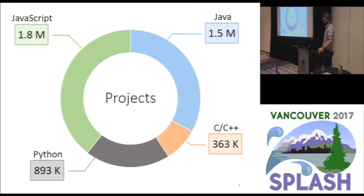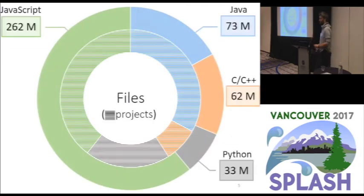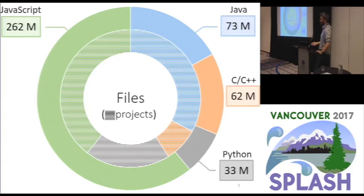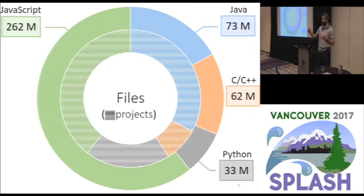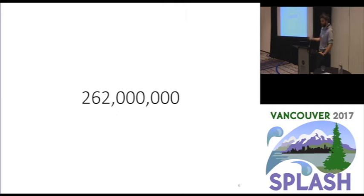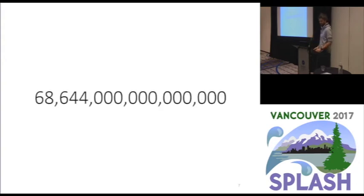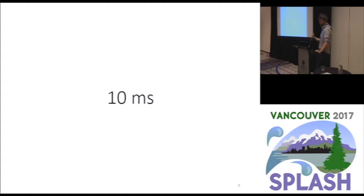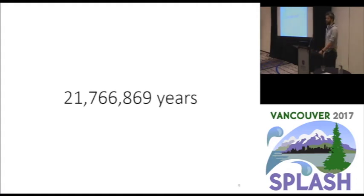In terms of files — the outer circle — JavaScript dominated with 262 million files, more than the other three languages combined. If we were to analyze this and naively compare each file with every other, that means 262 million files in JavaScript's worst case, leading to an astronomical number of comparisons. Assuming each comparison takes 10 milliseconds, we'd end up with something close to 22 million years.